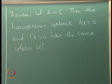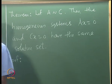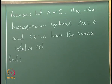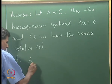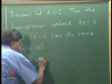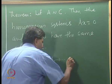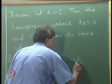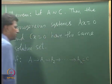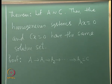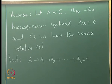For the proof: since A is row equivalent to C, there is a finite sequence of elementary row operations taking A to A1, A2, and so on up to Ak = C. We must show that the systems Ax = 0 and Cx = 0 have the same set of solutions.